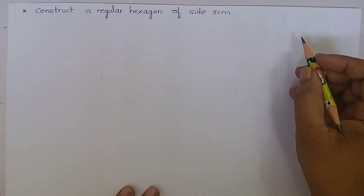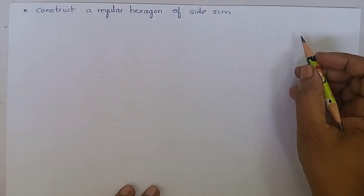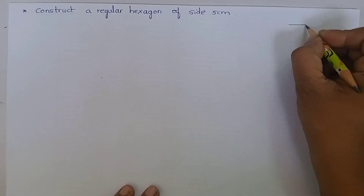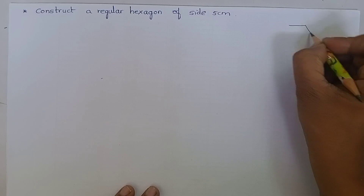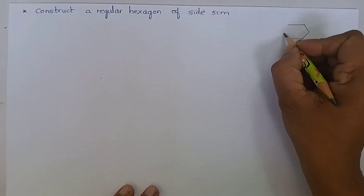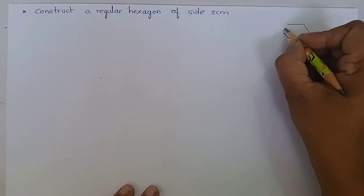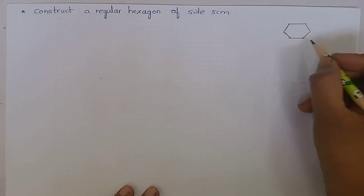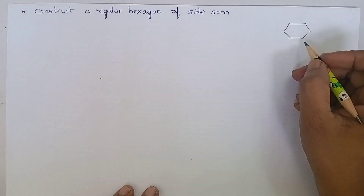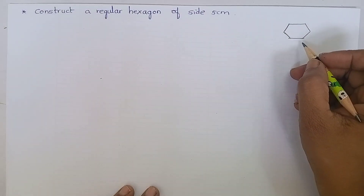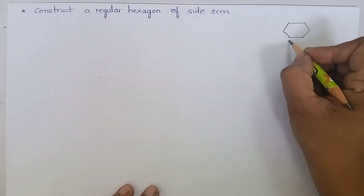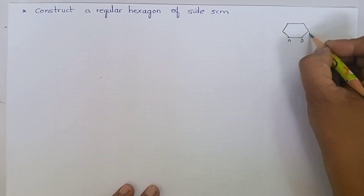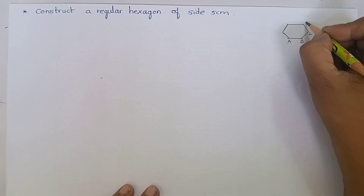Let us draw a rough diagram. It is a regular hexagon. Let us name it as ABCDEF.